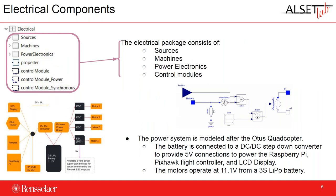Next we have our electrical components. This sub-package consists of sources, machines, power electronics, and control modules. Our power system is based off of the Otis quadcopter. The overall schematic showing the hierarchy of that power system is shown on the left. We have a three-cell LiPo battery operating at 11.1 volts feeding a DC-to-DC step-down converter to control the voltage supplied to the Raspberry Pi and all external sensors, and then we have the battery directly connected to the four motors.